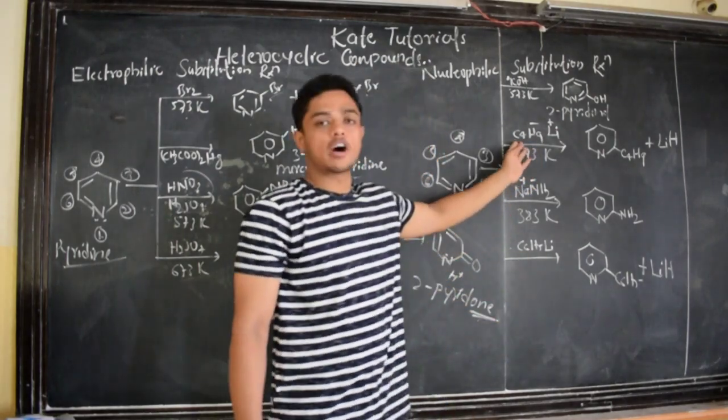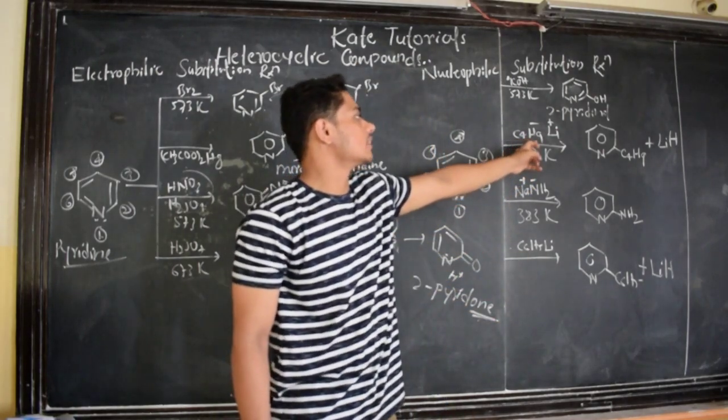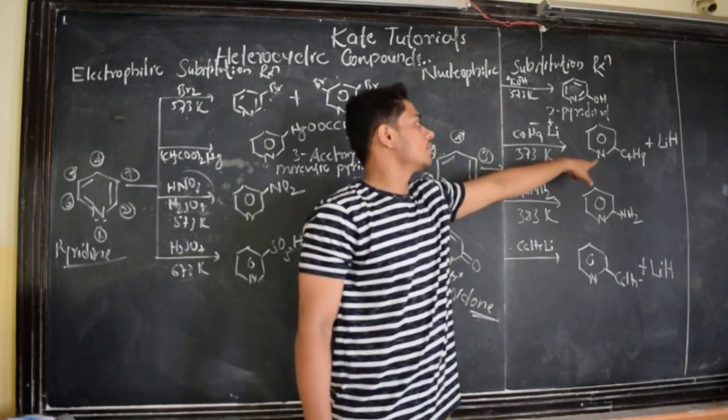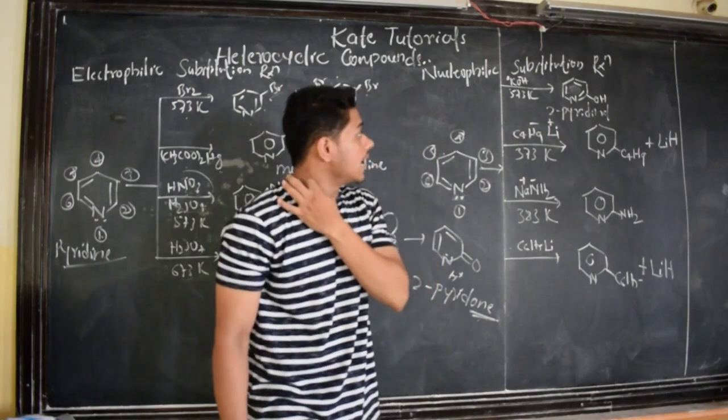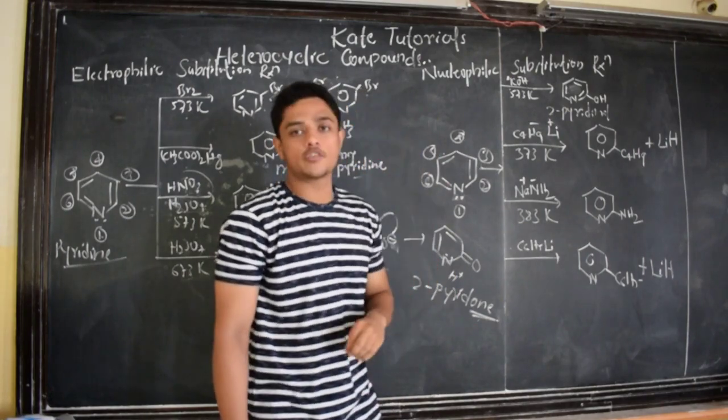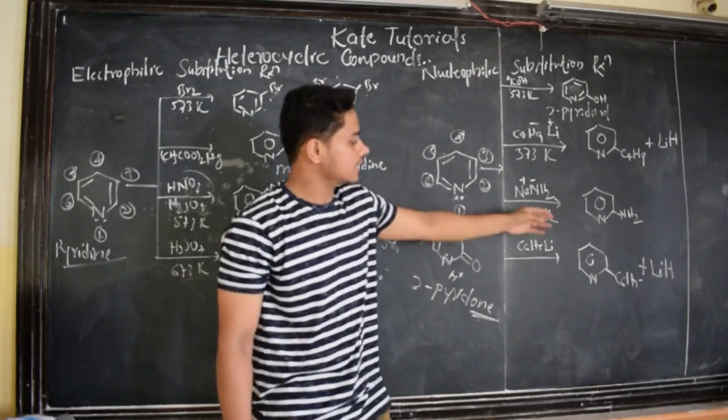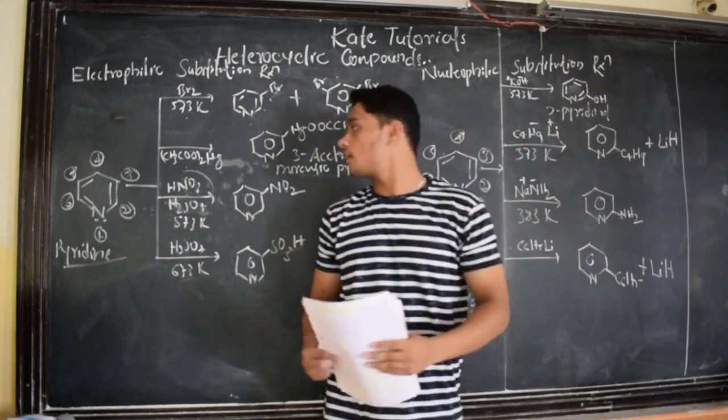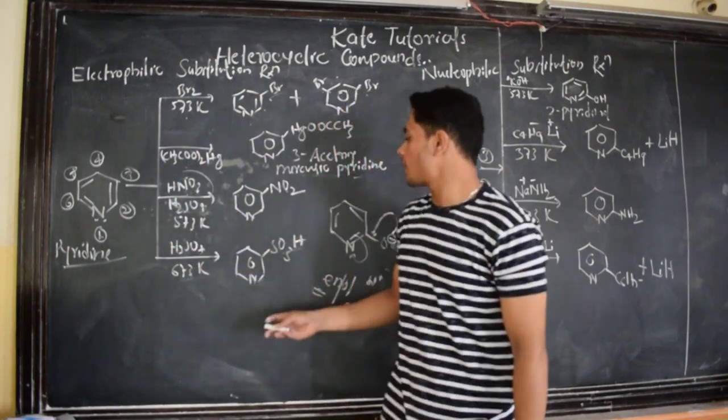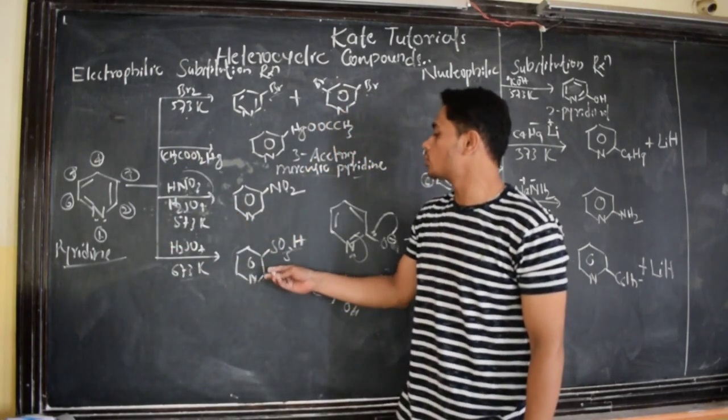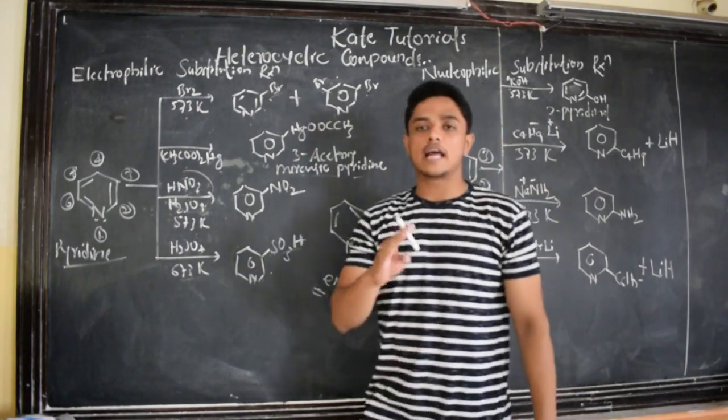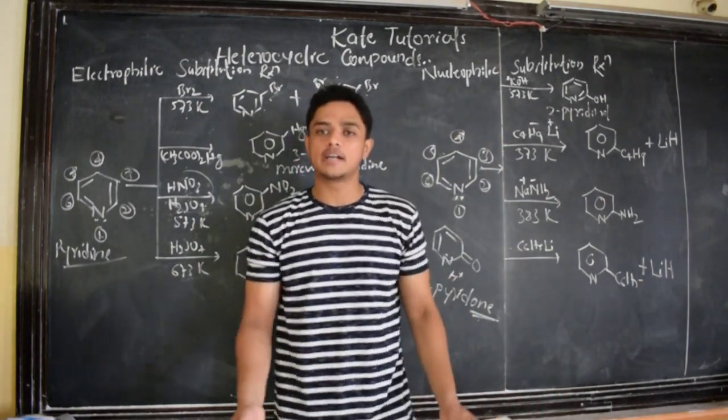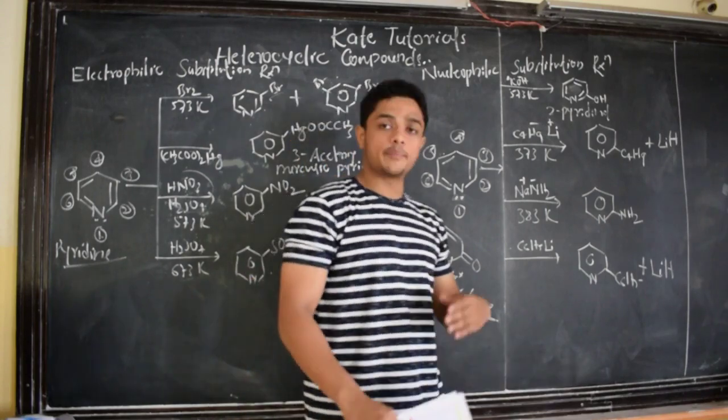Then here, see, organometallic compound C4H9, this is butane, lithium at 373 Kelvin. We are going to get this product. And here in nucleophilic substitution, we observe that the nucleophile attacked only to the second position, 1-2, the second position the nucleophile attacked. Whereas the electrophile attacked to the third position, 1-2-3, third position the electrophile attacked. Why this is so? That will be explained in my next video which will be in series.